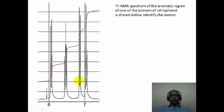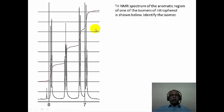If you observe the spectrum very carefully, in the region between 6.9 to about 8 ppm, there are 4 multiplets available. If you look at the integration, it corresponds to one hydrogen intensity each — this integration, this integration, this one, and the last one also corresponds to one hydrogen intensity. This is a nitrophenol molecule, so it is a disubstituted aromatic compound with 4 aromatic hydrogens. The integration essentially matches to the 4 aromatic hydrogens in the molecule.